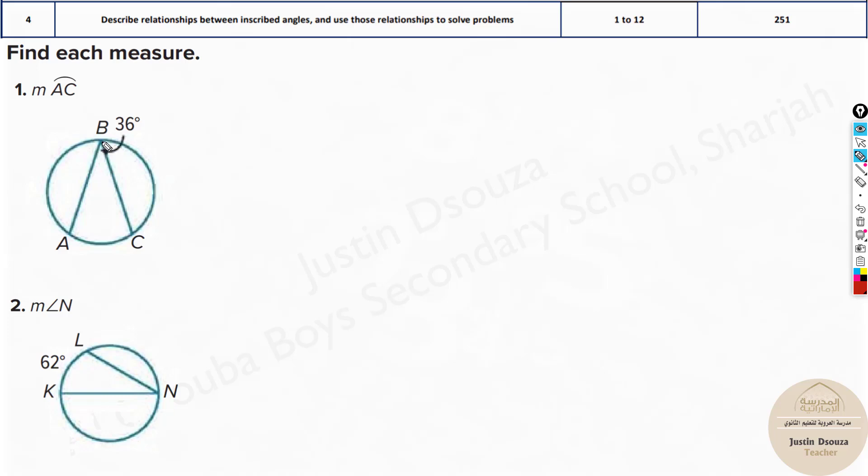Here we can see angle B is inscribed. How do we find this measure of arc AC? There's a simple formula. Whenever we have an inscribed angle, this arc is twice the inscribed angle, or the inscribed angle is half of this arc.